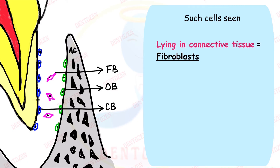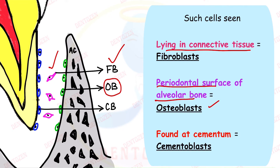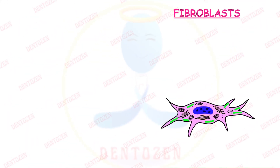We can identify which synthetic cell is which by location. When synthetic cells lie in the connective tissue of the PDL, they are called fibroblasts. When present on the periodontal surface of bone, they are called osteoblasts. When found at the cementum, they are called cementoblasts. Each has some unique points.